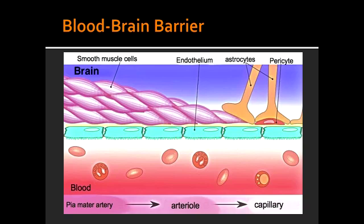What are the three structures that form the blood-brain barrier? The blood-brain barrier is formed by tight junctions between non-fenestrated capillary endothelial cells, basement membrane, and astrocyte foot processes.